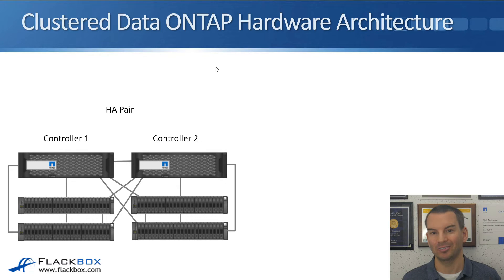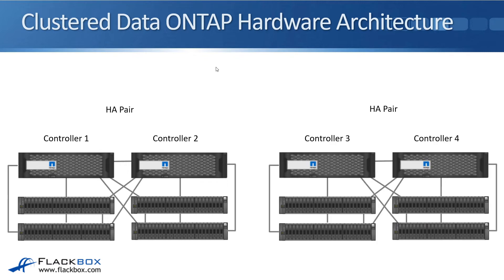Where Clustered Data ONTAP is different is that you can add additional controllers to the cluster. The controllers are also known as nodes in a clustered system — controller and node mean exactly the same thing. We've also got Controller 3 and Controller 4, which are also an HA pair. Controller 3 is connected to Controller 4's disks for redundancy, and Controller 4 is connected to Controller 3's disks. We don't connect every controller to every other controller's disk shelves, because that would require too many ports and cables — they're arranged in HA pairs.